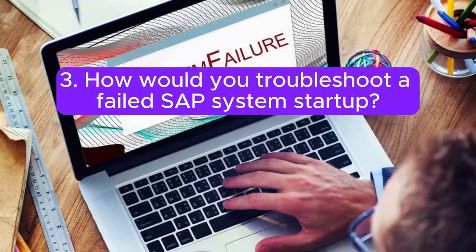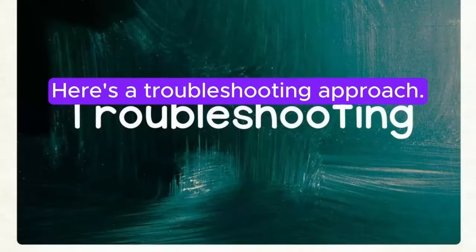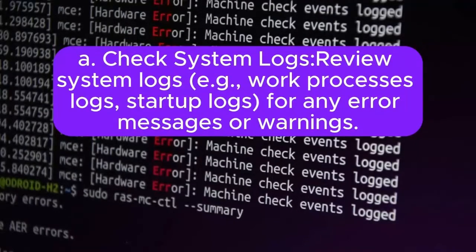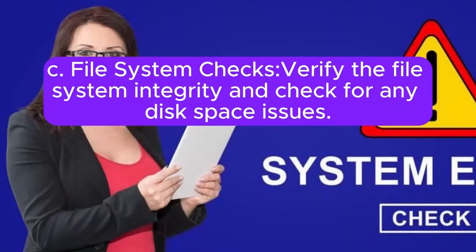Question 3: How would you troubleshoot a failed SAP system startup? A failed SAP system startup can be due to various reasons. Here's a troubleshooting approach. A. Check system logs: review system logs, work process logs, and startup logs for any error messages or warnings. B. Database connectivity: ensure proper connectivity between the application server and database server. C. File system checks: verify file system integrity and check for any disk space issues.